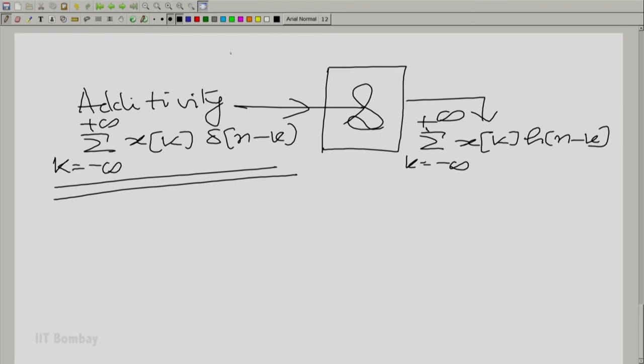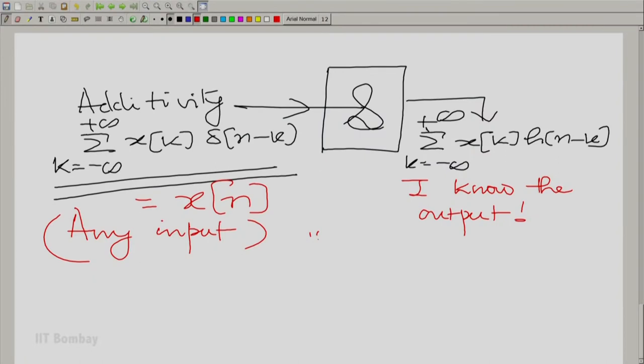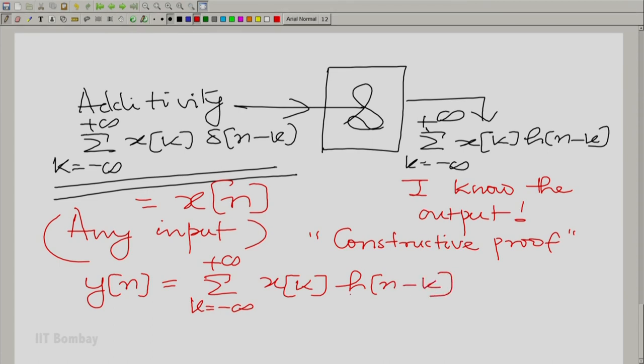What is really this particular expression that we have here? This is essentially x of n. For any input, what I have said is, if I know the unit impulse response, I know the output. In fact, not only do I know the output, when I look at this expression, I am also able to tell you what that output is. We have just completed a proof of this theorem. What we have shown is that we are able to construct the output for any input once we know the unit impulse response. What is more, I also know how to construct that output. This is what we call a constructive proof. I can tell you that the output is y of n given by summation k going from minus to plus infinity, x of k, h of n minus k. The proof is complete.